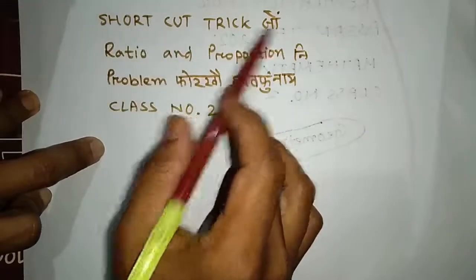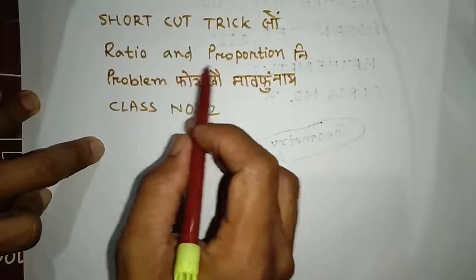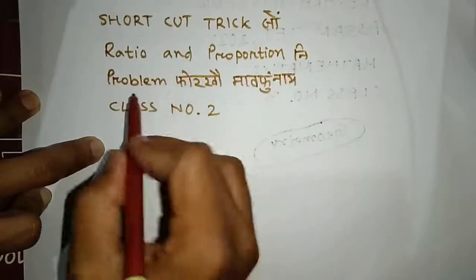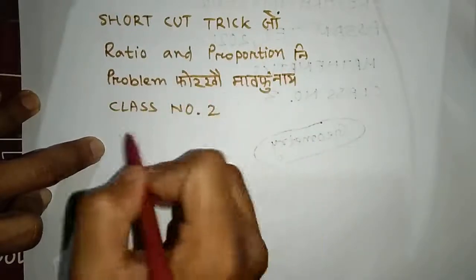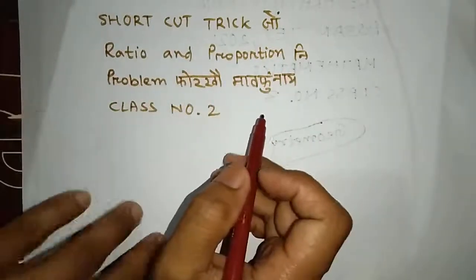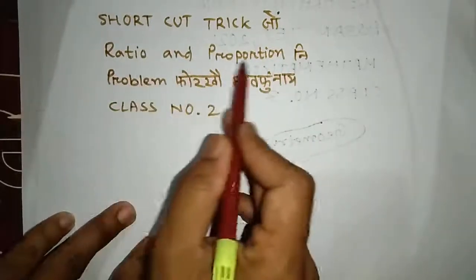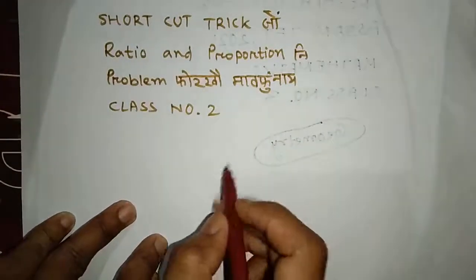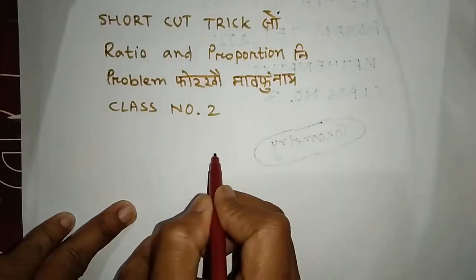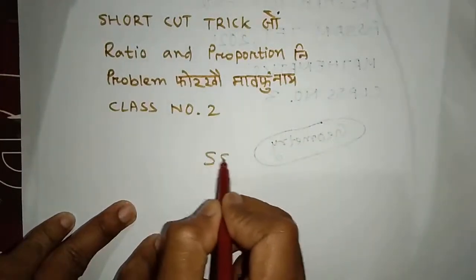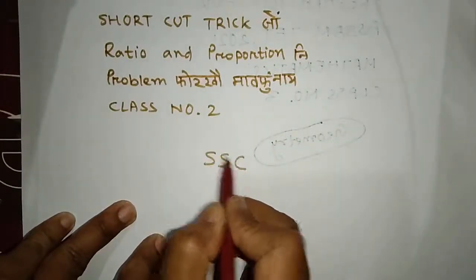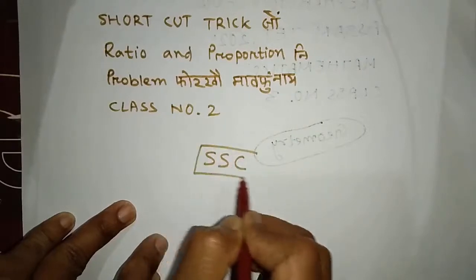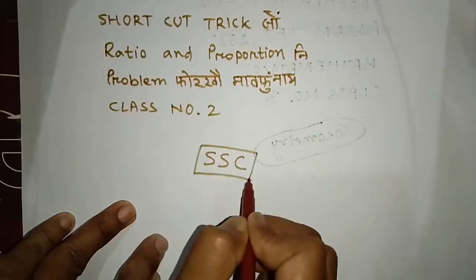The shortcut trick is the ratio and proportion of this problem. The ratio and proportion of this problem is SSC.